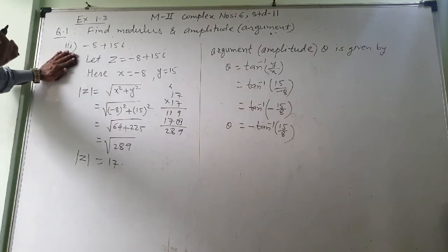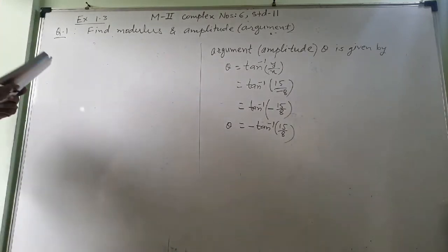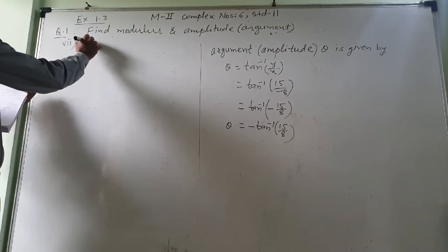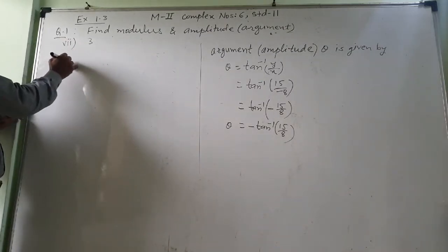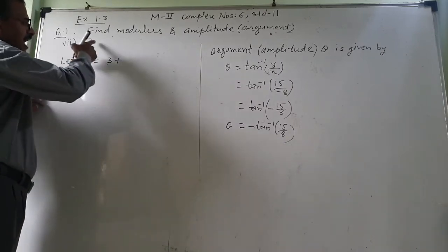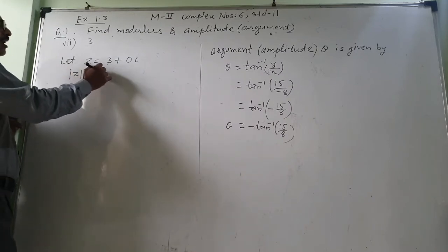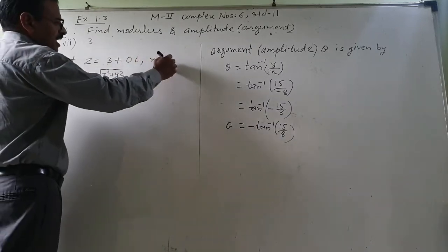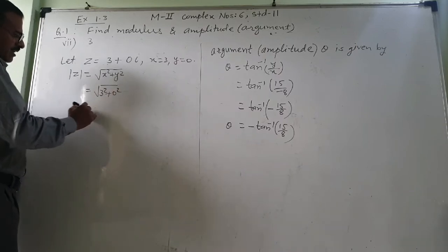The 7th one is different. Here z = 3, which is just a real number. So let z = 3 + 0i. Modulus z = √(x² + y²), where x = 3 and y = 0. That equals √(3² + 0²) = √9 = 3. So modulus z = 3.